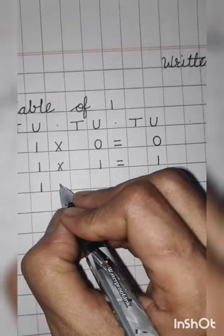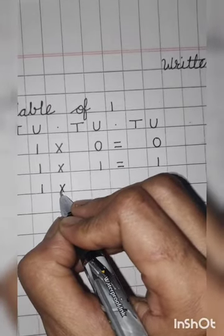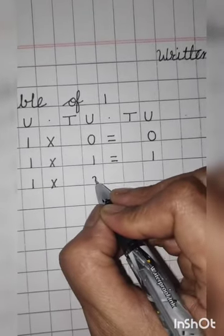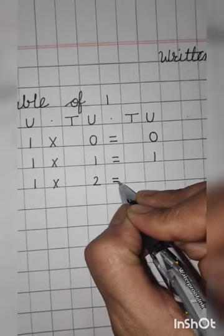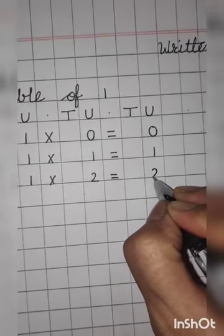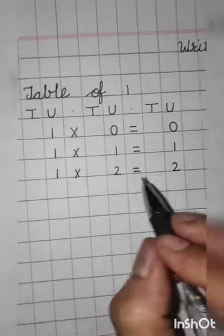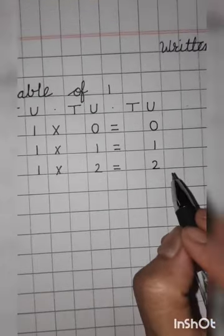One. Put the sign of multiplication. Two. Equal to two. One. Two's are two.